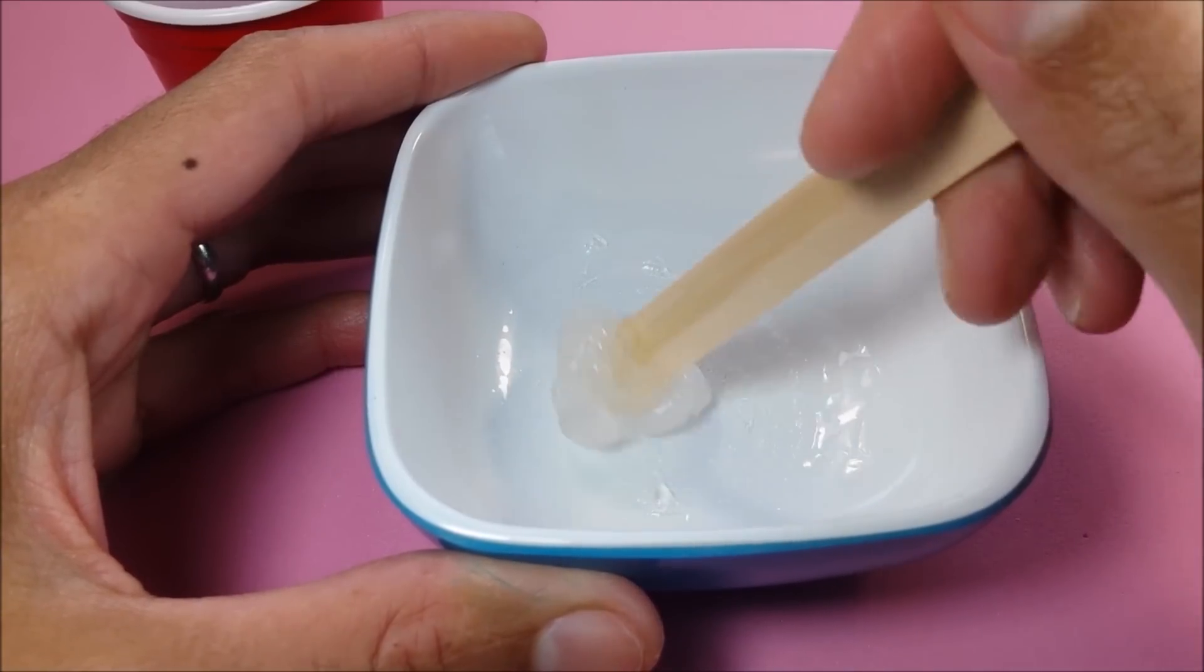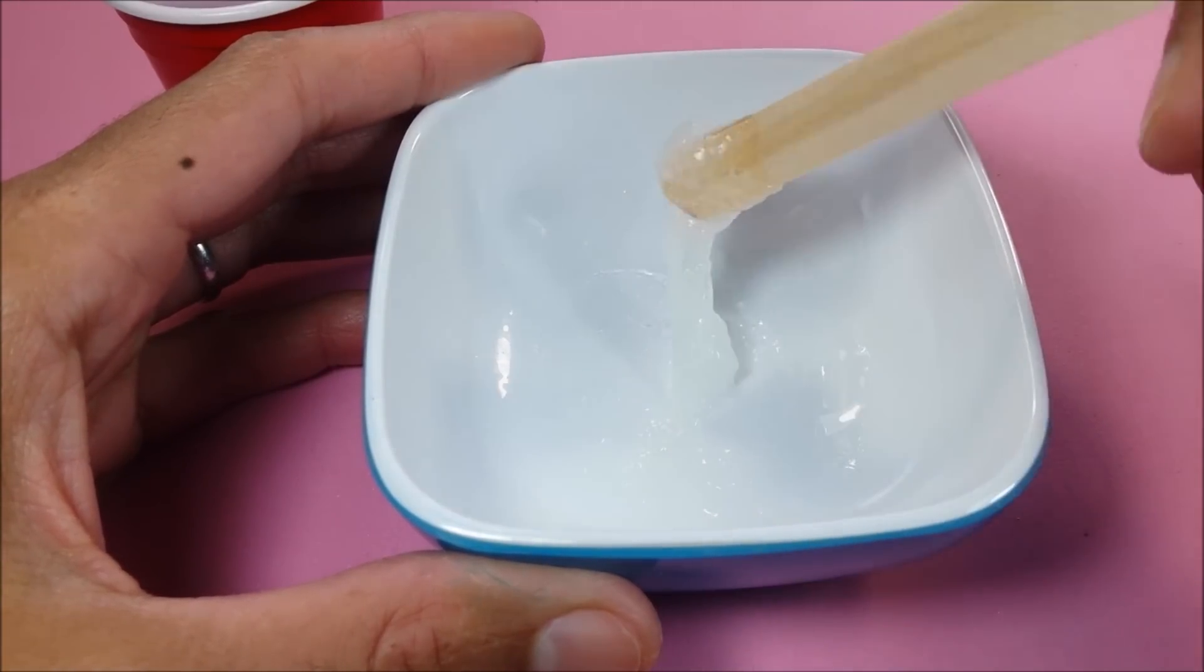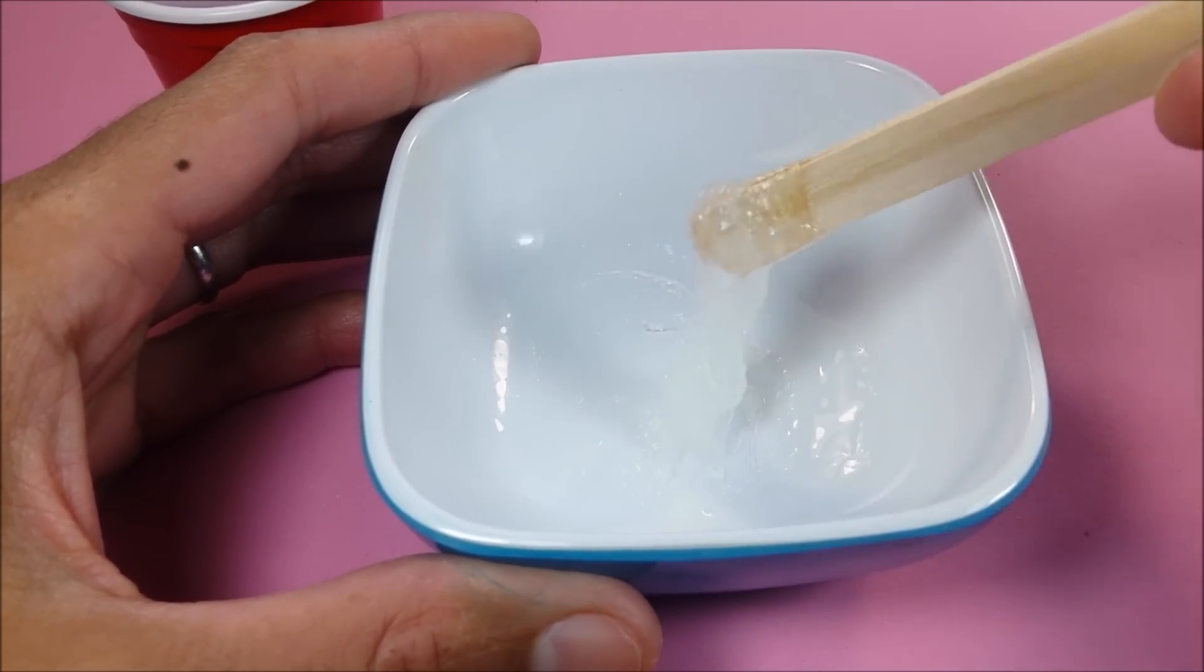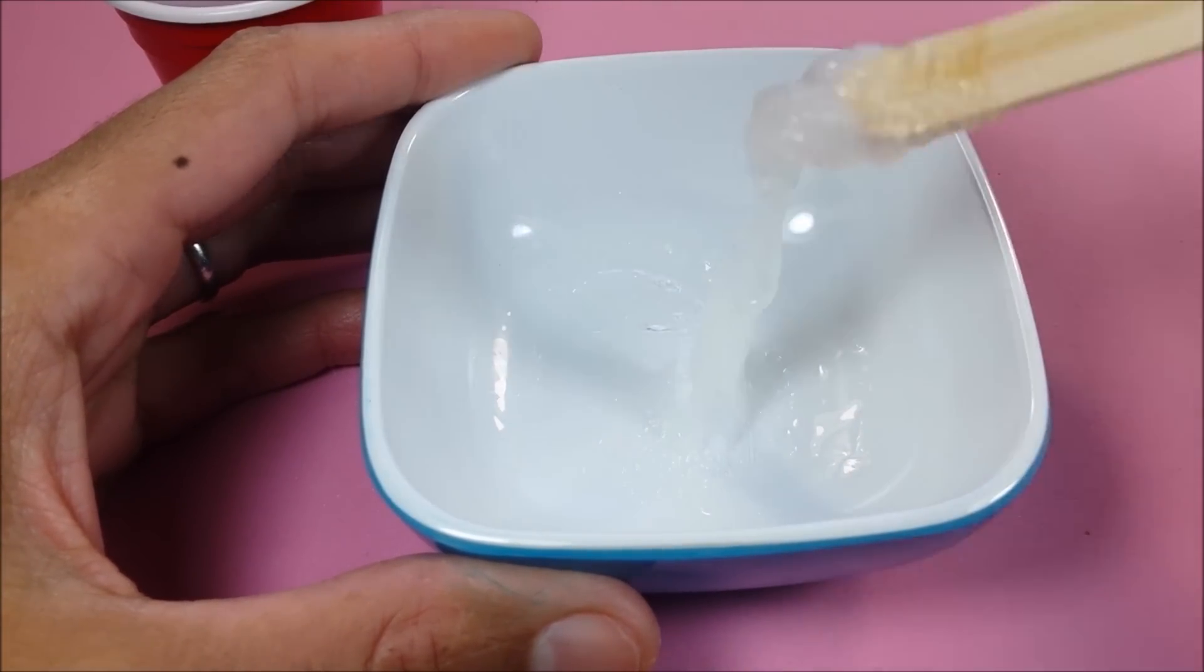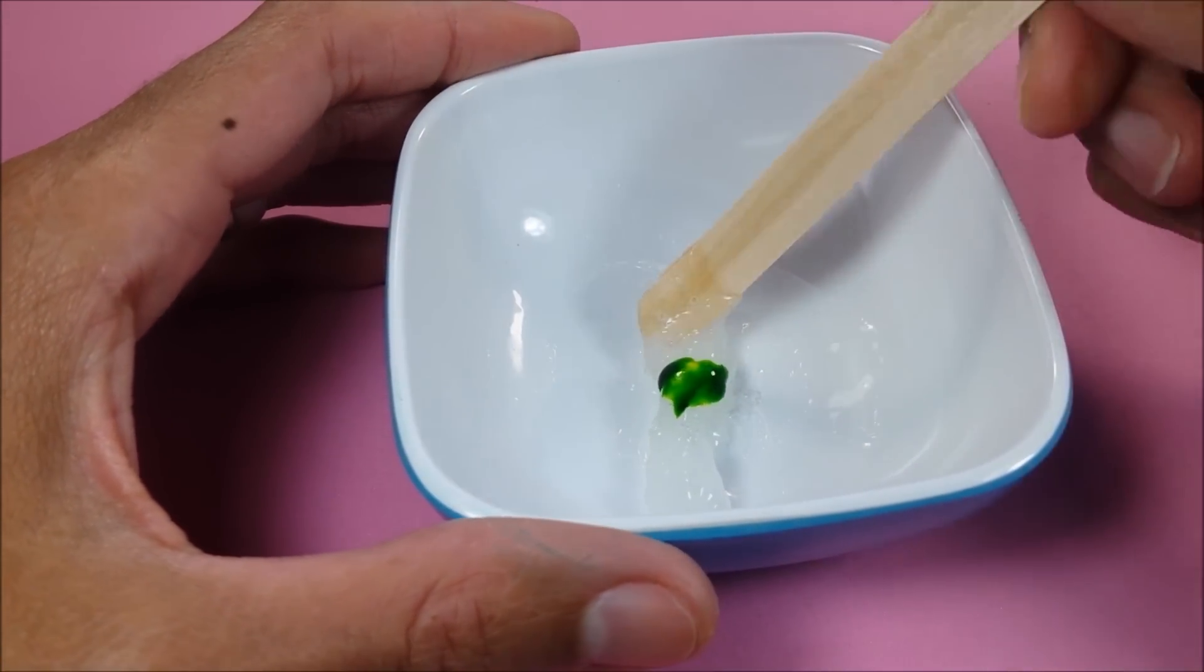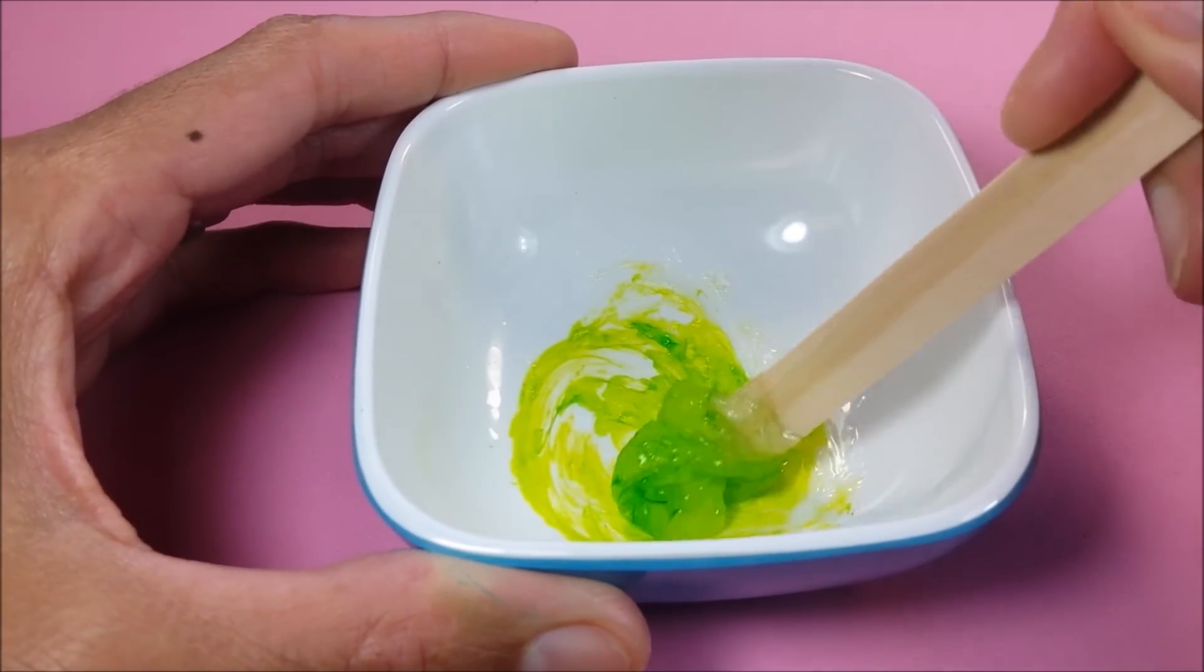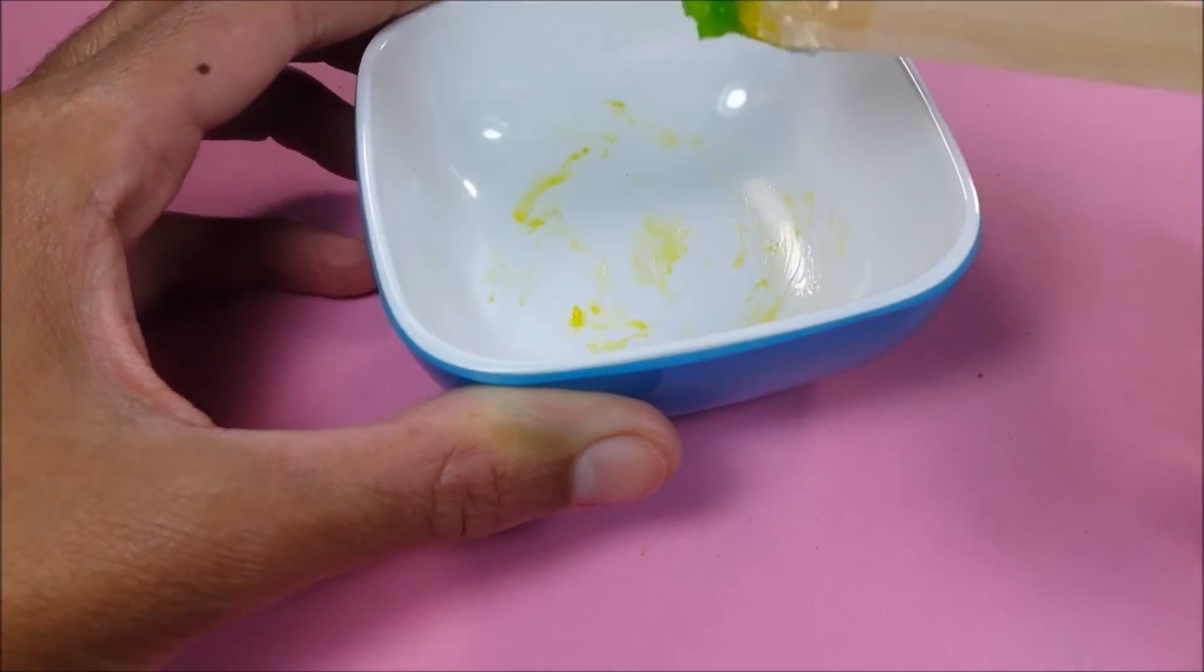I just keep stirring until I have the consistency that I want. I add a drop of green food coloring, and it's ready to pop off.